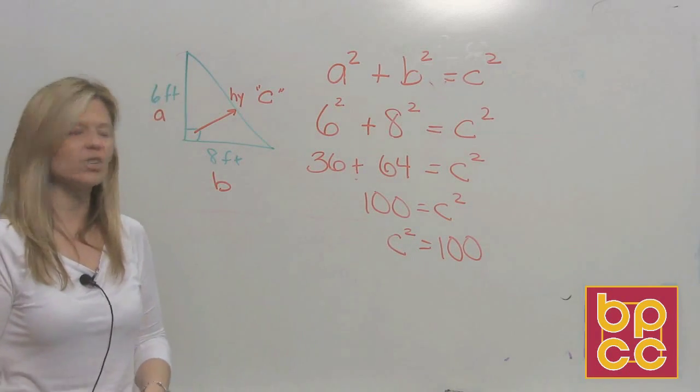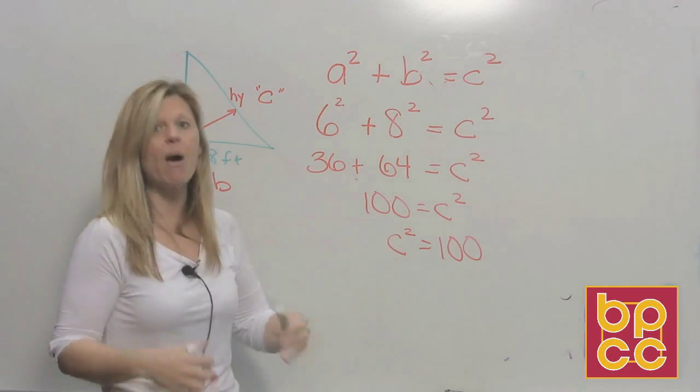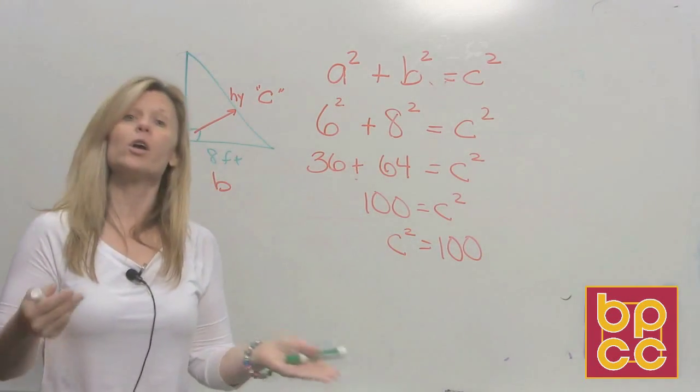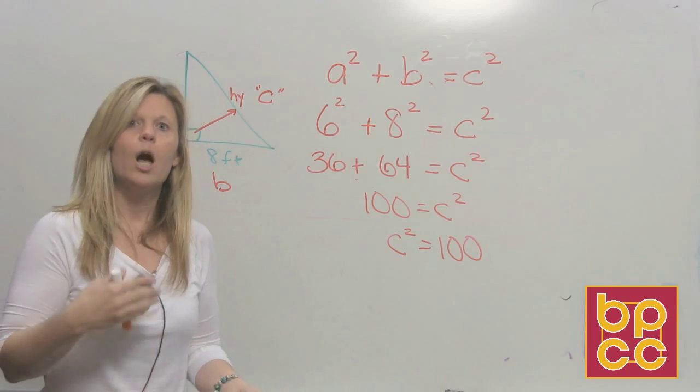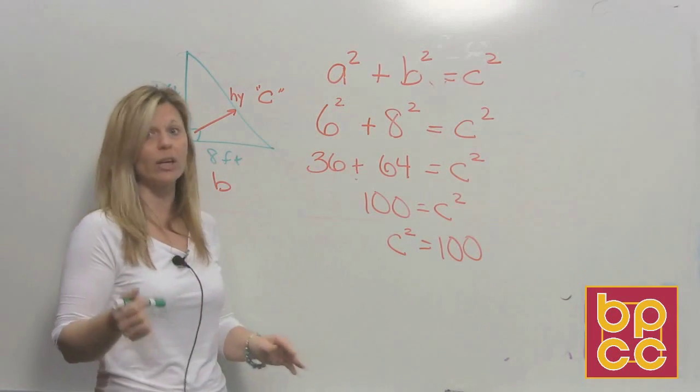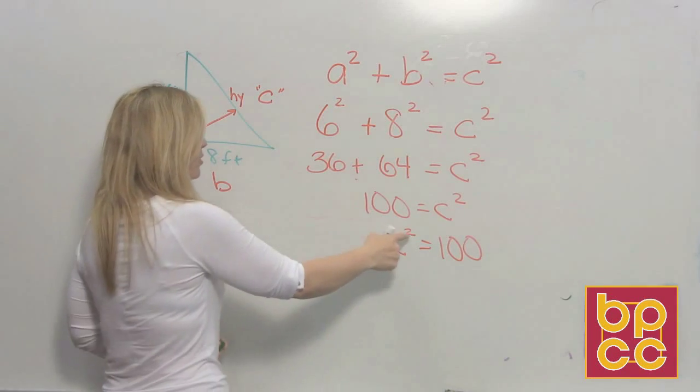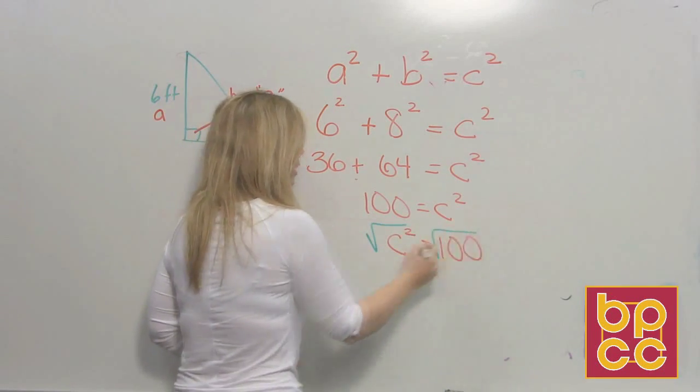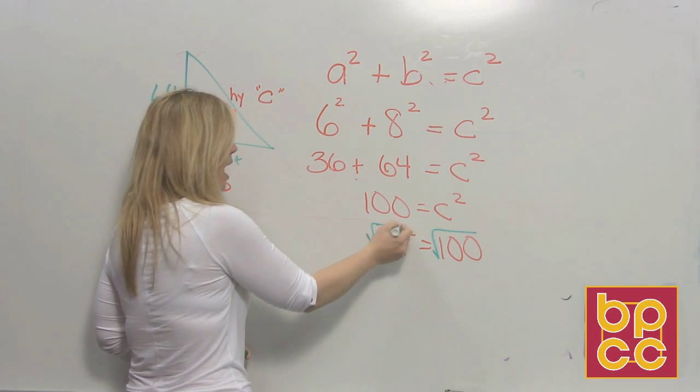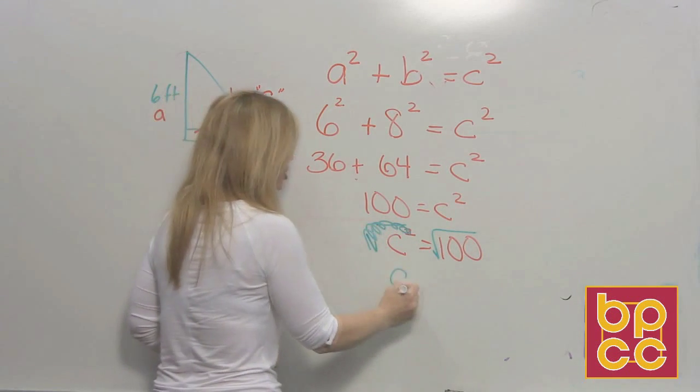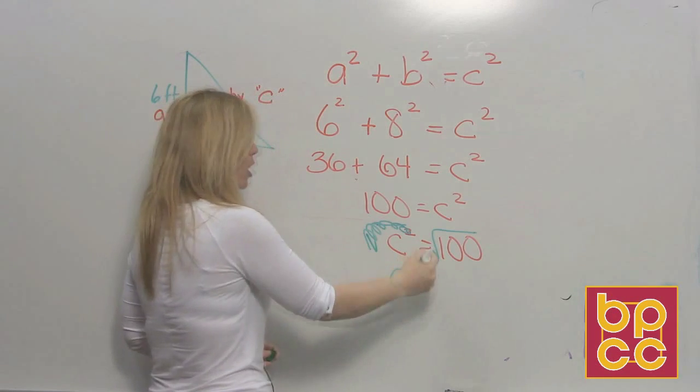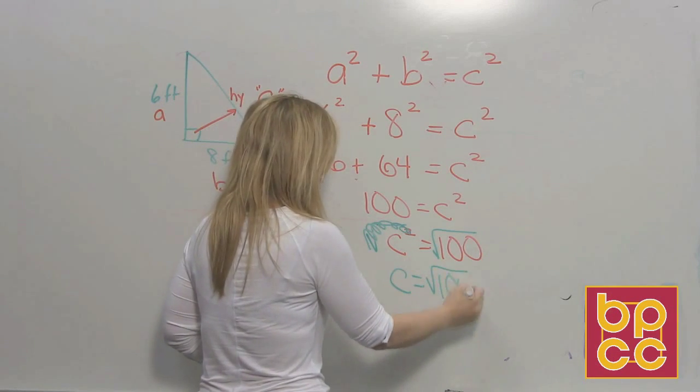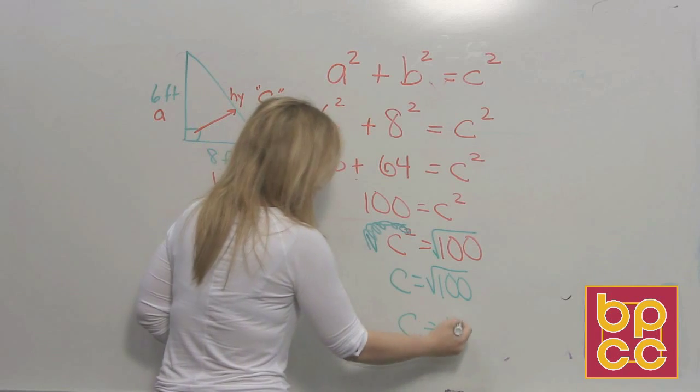Now, the question is, do you want to set it equal to 0 and factor it? Or do you want to do your square root method? Well, we found out when we worked with Pythagorean theorem, it's really quicker to do the square root method. The opposite of squaring is square root. Squares and square roots are opposites, inverses. They cancel each other out. We all know we have a square root of 100 here. What is the square root of 100? It is 10.